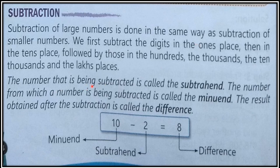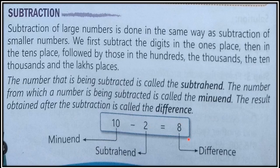The number that is being subtracted is called the subtrahend, and the number from which a number is being subtracted is known as the minuend. For example, ten is known as the minuend and two is known as the subtrahend — from ten we are subtracting two. This two is the subtrahend, this ten is the minuend, and the answer is known as the difference of these two numbers.